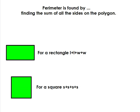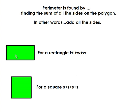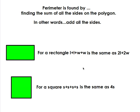Perimeter is found by adding all the sides of the polygon — sum means adding, so it just means to add up all the sides. For a rectangle: length plus length plus width plus width, which is the same as two lengths plus two widths. For a square, we call one side S — since all sides are equal, it's S plus S plus S plus S, or since you have four of them, four times one of the sides.